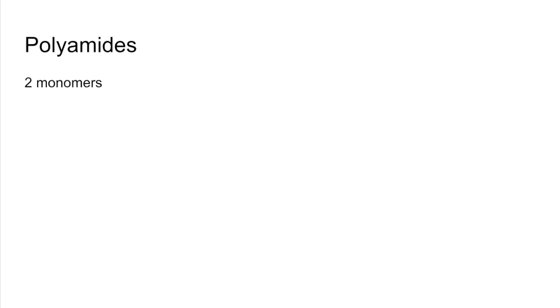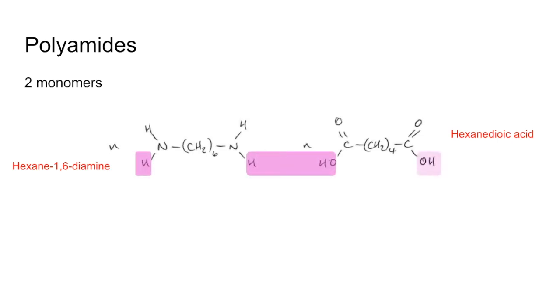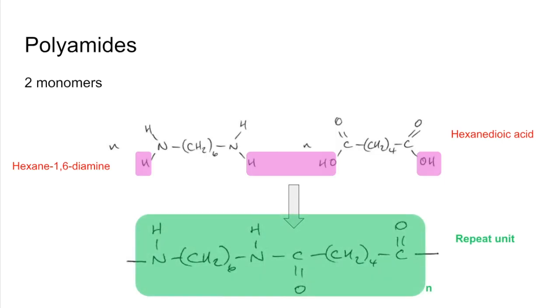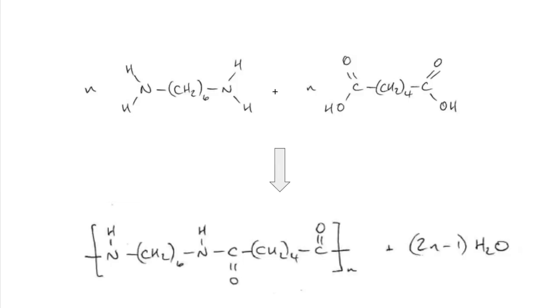Moving on to polyamides made from two monomers. We're using these two here: hexane-1,6-diamine and hexane-dioic acid. Again we've got to make a water molecule, and we'll just take off the groups at the ends as well. Join together what we're left with. That's the repeat unit, and there's your amide linkage, the C double bond O NH. The equation for that would look like that.